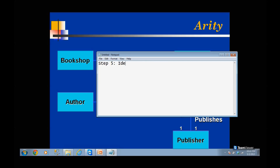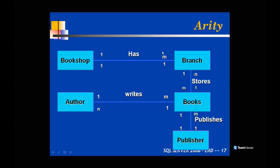Step five is to identify the cardinality between entities. Cardinality means the degree of association. In mathematics you would have studied one-to-one, one-to-M, and M-to-M relationships — these three are called cardinality or degree of association, describing how two entities share a relationship. For example, one bookshop can have many branches and each branch belongs to only that bookshop, so that is a one-to-M relationship.